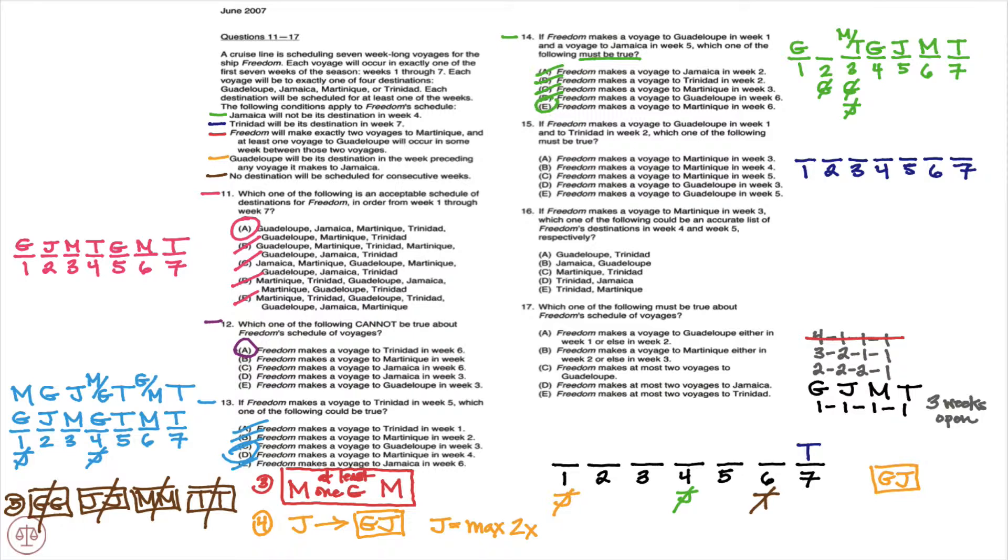Stating that Guadalupe is going to be in week 1 and Trinidad is in week 2, well we know Martinique would be week 3, Guadalupe in week 4, Jamaica, Martinique, and then Trinidad.